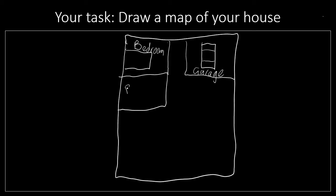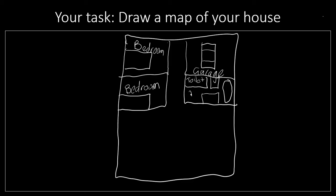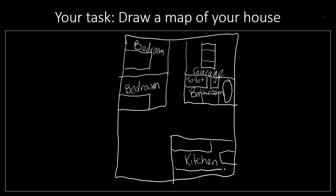Here is another bedroom, and I'm going to draw a bed there. Here is a bathroom — I'm going to put the toilet there, here is the bath, and here is the shower. I'm going to write 'bathroom.' Over here is my kitchen — there's my bench, here's the fridge, and here's another bench. I can even put an arrow and write 'fridge.'